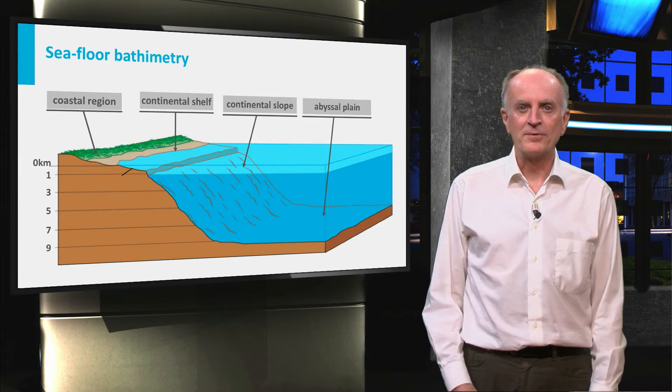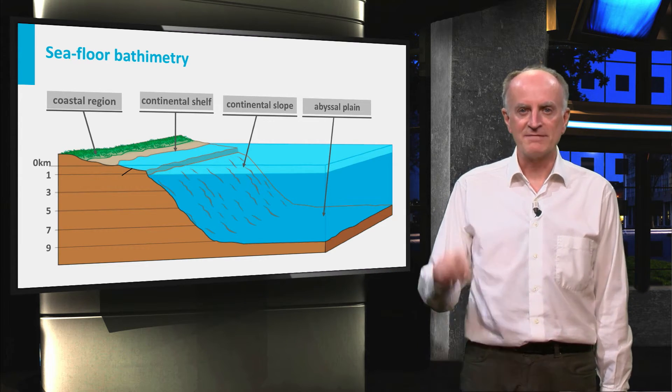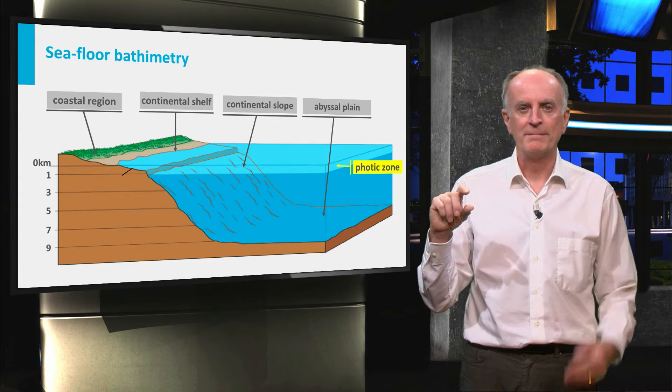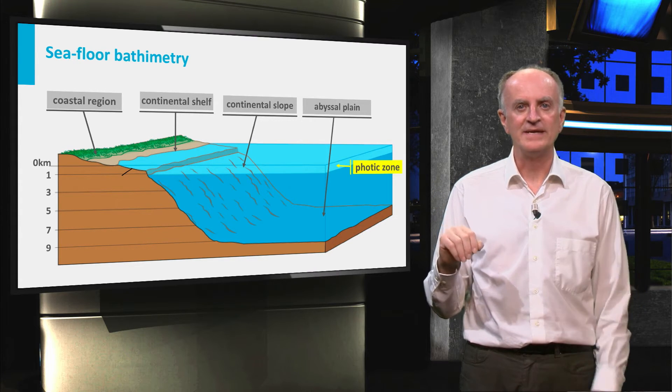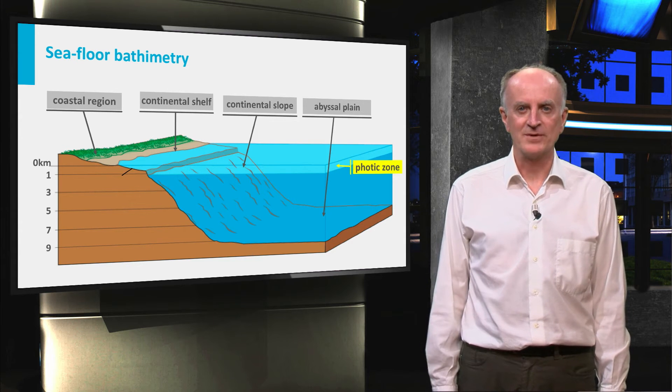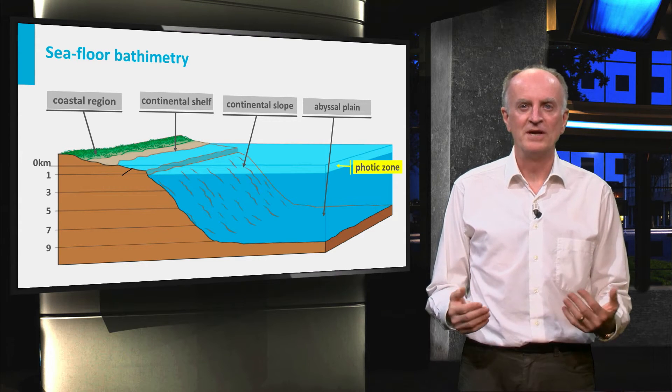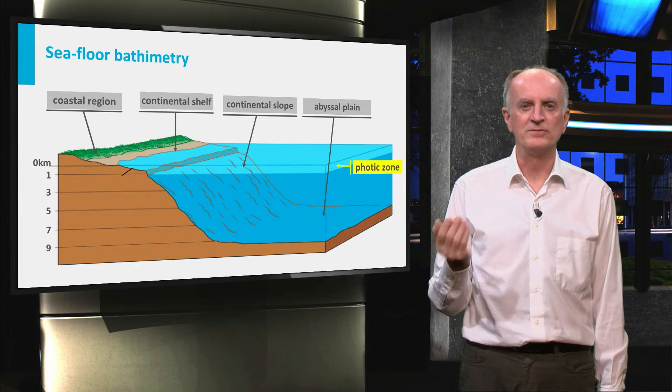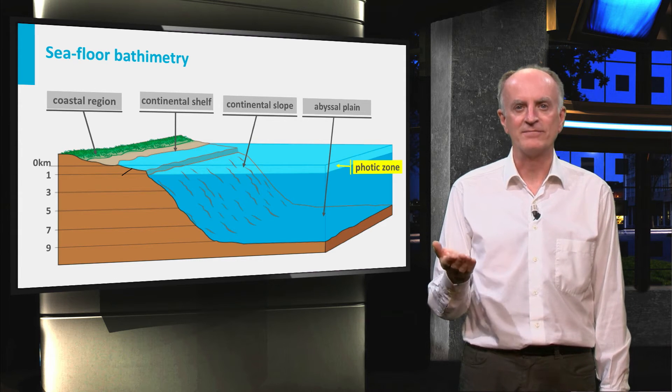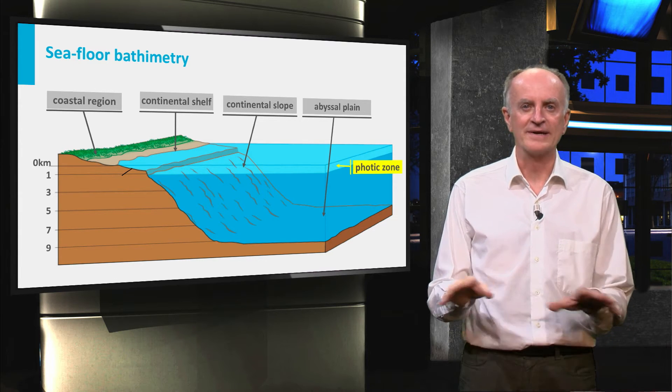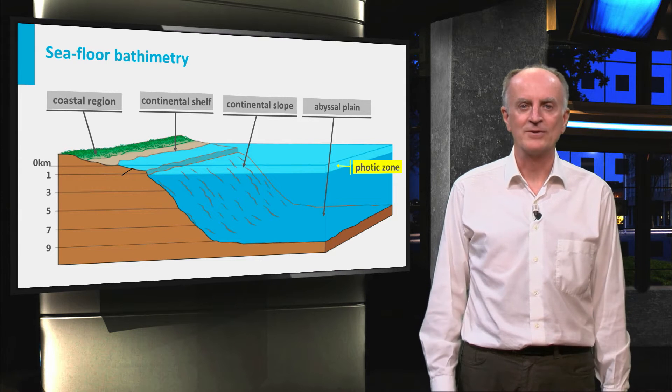A further very important element in the marine system is the photic zone, which is the water column penetrated by light. Here photosynthesis is possible and small plants can flourish, forming the first ring of the food chain. Underneath the photic zone, waters become dark, cold, and inhospitable.